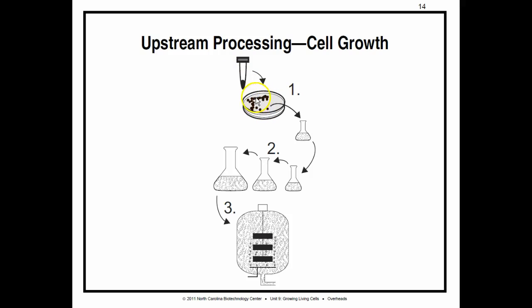The first stage of bioprocess manufacturing is to grow a small sample from the cell bank to the volume required to inoculate a production bioreactor, which might hold tens or hundreds of thousands of liters. Take a sample from the cell bank and use it to inoculate medium in a petri dish. Recall that each colony starts from a single cell.